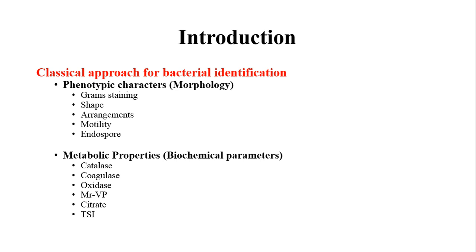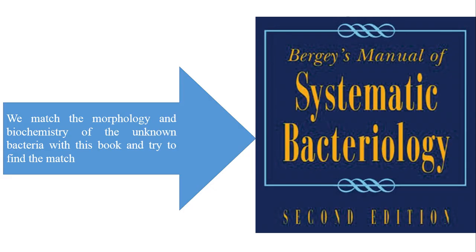In the classical approach of bacterial identification, we use a combination of these two parameters. Once we have the results of all these microscopic and biochemical tests, we make a table with these results. There is a book called Bergey's Manual of Systematic Bacteriology, which is the complete database of all known bacteria, containing their biochemical, microscopic, and cultural properties. We need to match the data of the unknown bacteria we are studying with this database and find a match.